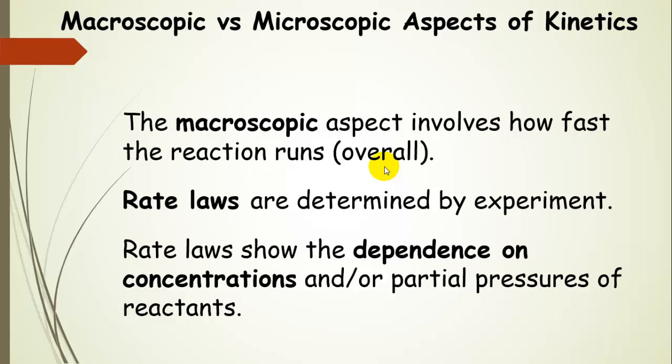Alright, so now we're going to talk about two aspects of kinetics throughout this whole section. The first is the macroscopic aspect, and so this is going to be how fast reactions run overall. From these experiments, we're going to be able to derive rate laws from kinetics experiments. Rate laws just show the dependence on concentrations and/or partial pressures of reactants.